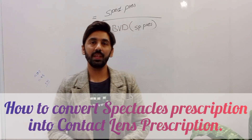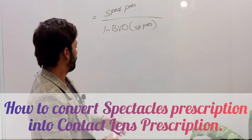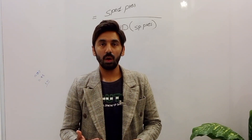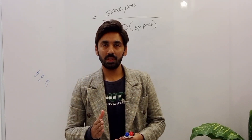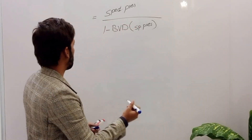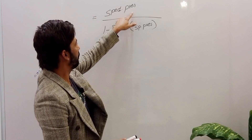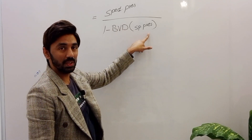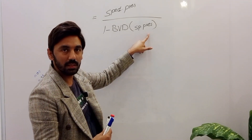Today's topic is about how we can convert a spectacles prescription into a contact lens prescription. Suppose a patient visits your clinic with a prescription of plus five spherical and demands a contact lens prescription. Being a good optometrist, you have to prescribe an accurate and precise contact lens prescription. The formula is: spectacles prescription divided by one minus back vertex distance (BVD) multiplied by the spectacles prescription.